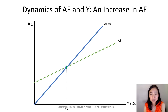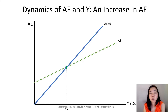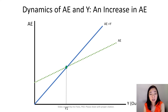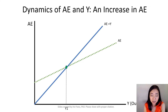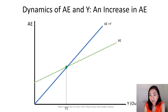Now suppose initially we're in equilibrium, so our aggregate expenditure schedule is this green dotted line. We have an intersection between this aggregate expenditure schedule and our 45-degree line. Our output is Y1 and that's exactly equal to our aggregate expenditure.